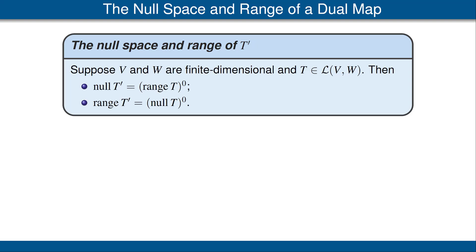Now we come to an interesting result that allows us to characterize the null space and the range of the dual of a linear map in terms of annihilators. Suppose V and W are finite dimensional vector spaces and T is a linear map from V to W. Then the null space of the dual of T is equal to the annihilator of the range of T, and the range of the dual of T is equal to the annihilator of the null space of T. You can find the proof of this result in the book.